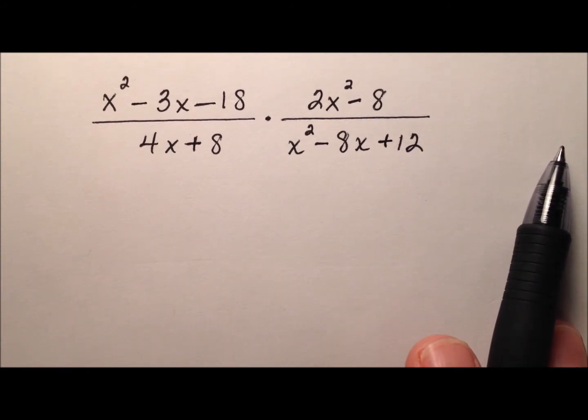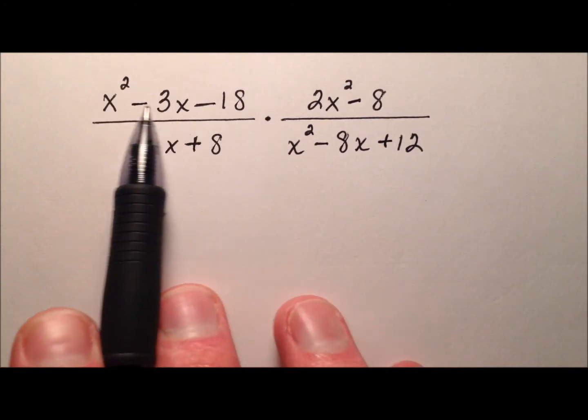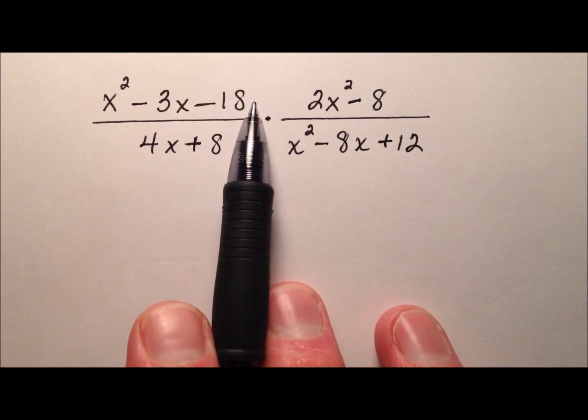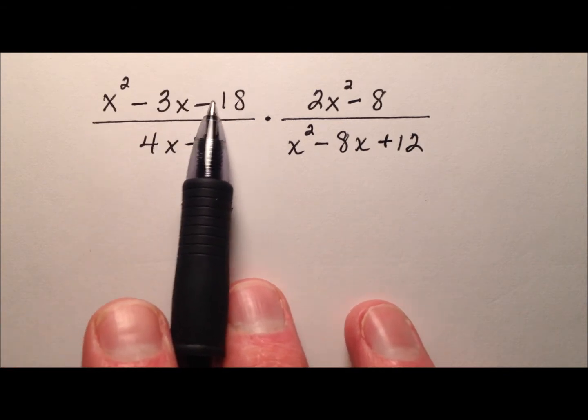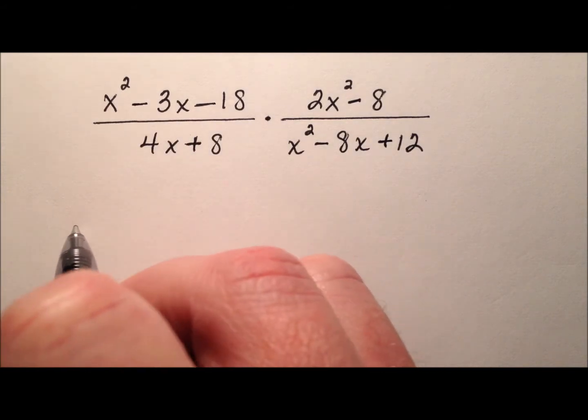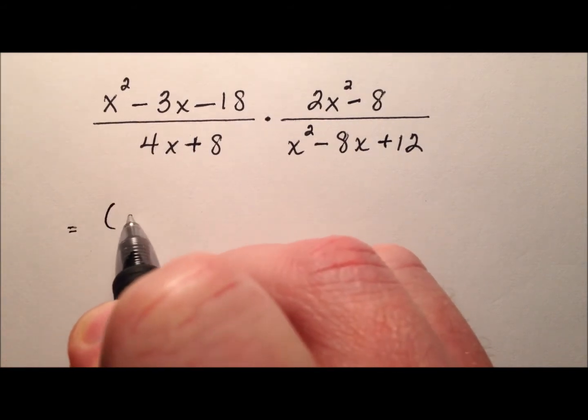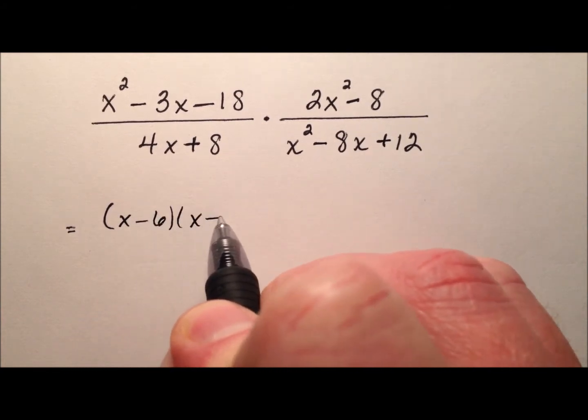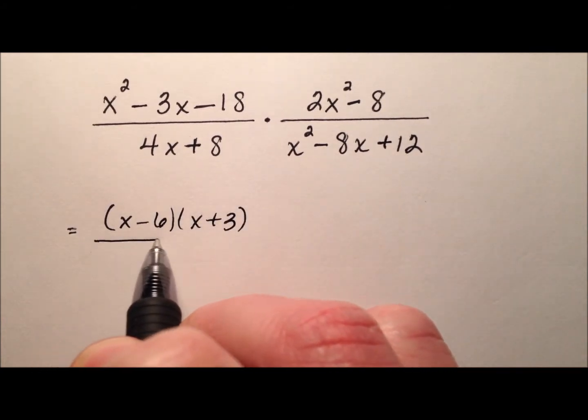Let's take a look at what that's going to look like. I have this quadratic right here and I would like to first factor it. What two numbers multiply to make negative 18 that add to make negative 3? This first one is going to look like (x - 6)(x + 3).